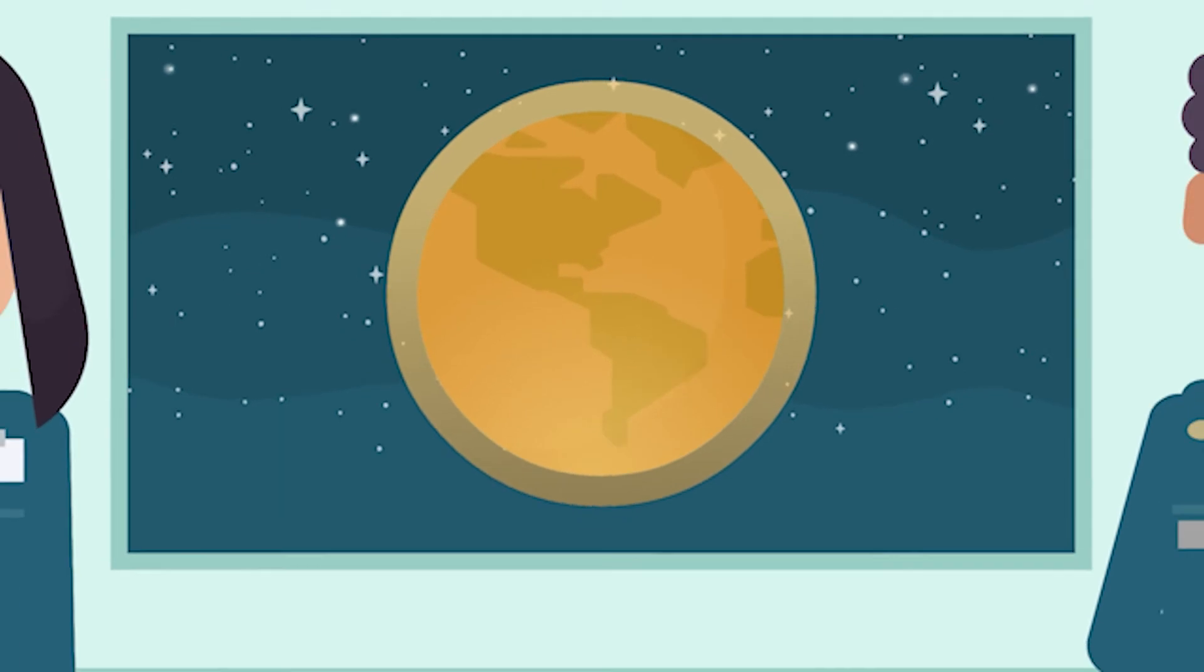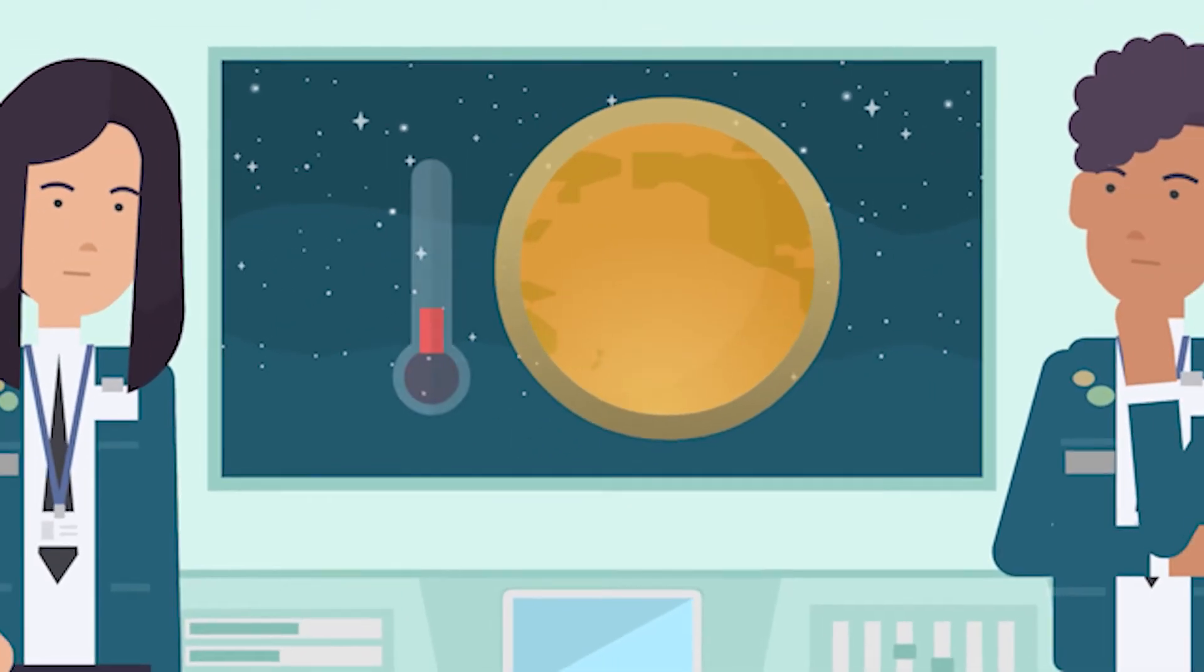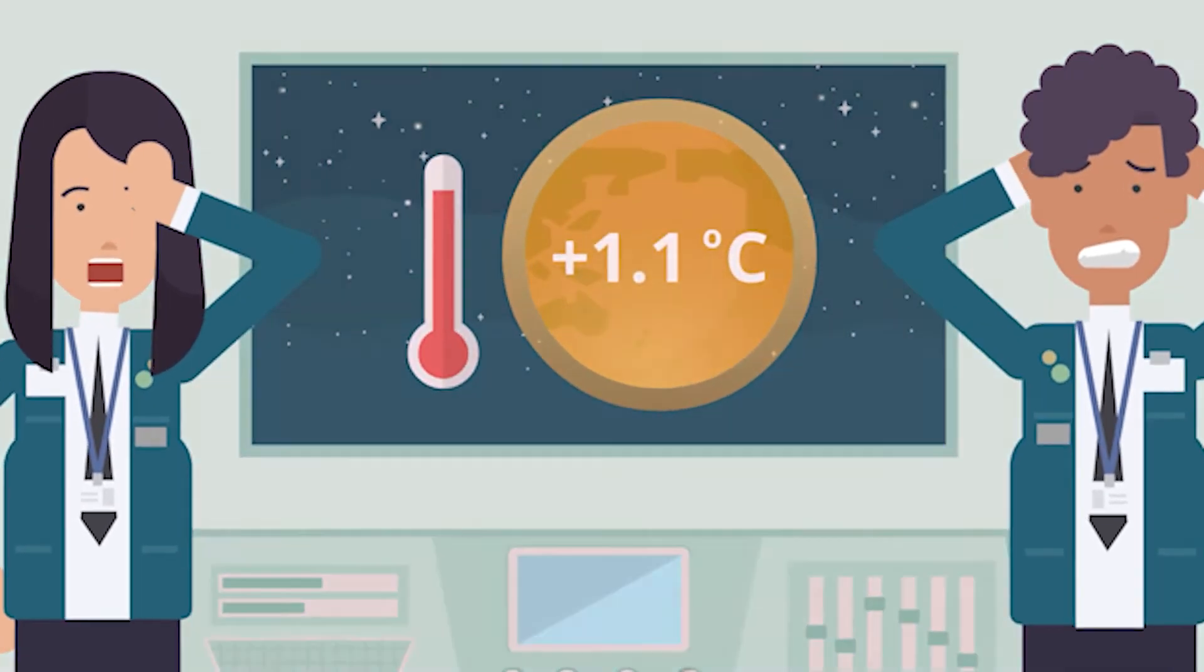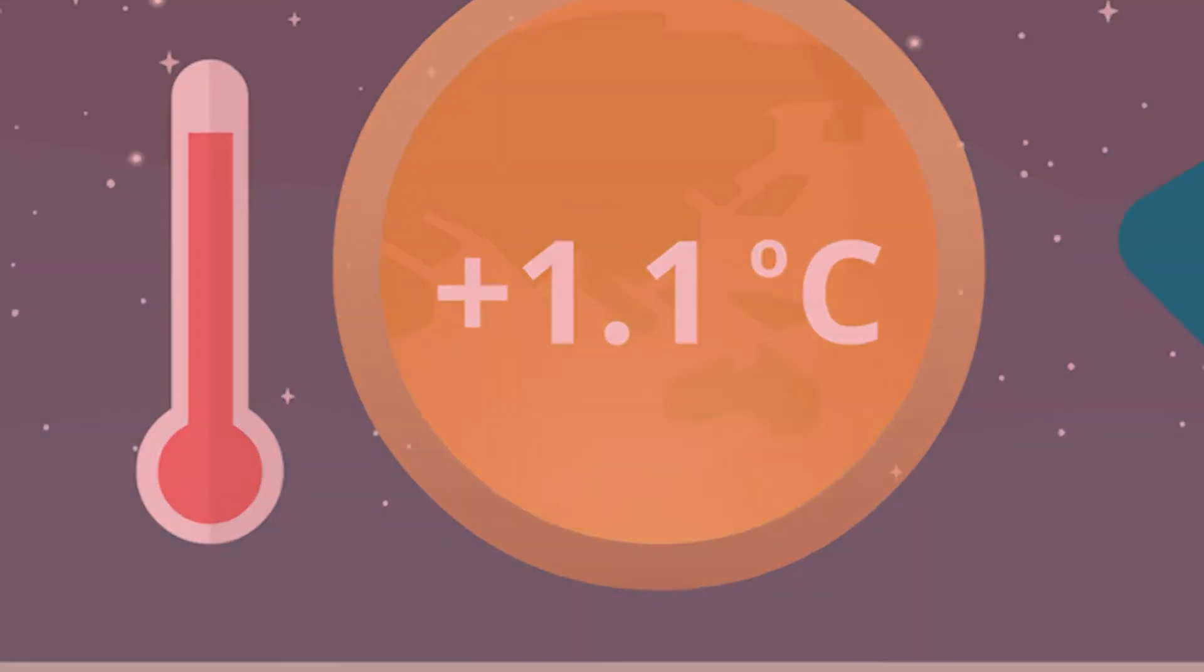Compared to before the industrial era, the global temperature has risen by at least 1.1 degrees Celsius. It may not sound like a lot, but the impact it has made over time is devastating.